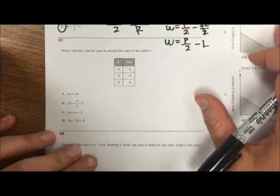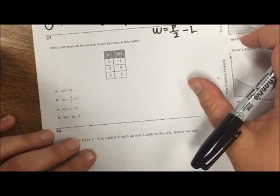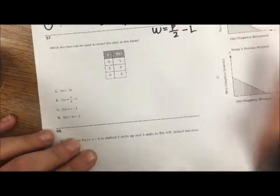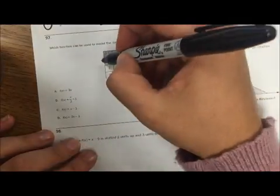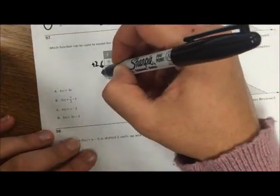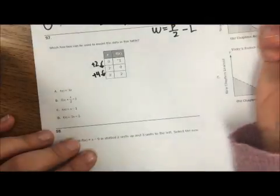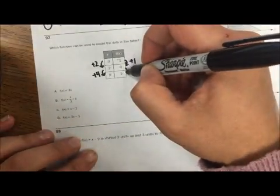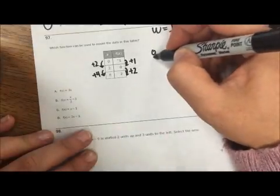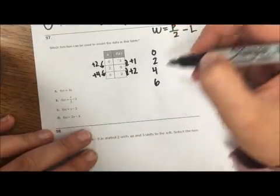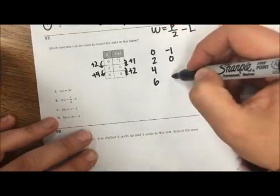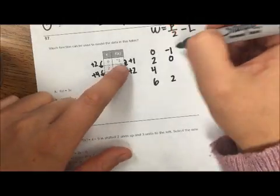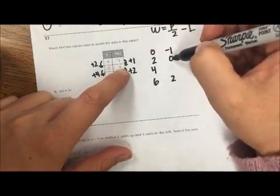97. Which function can be used to model the data in this table? Well, I'm going up by 2, up by 4. When I went up by 2, I added 1. When I went up by 4, I added 2. So let's stick 4 in there. So if I went up by 1 that time, I'm going to go up by 1 again.